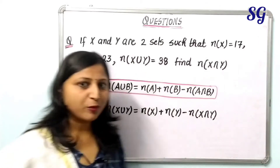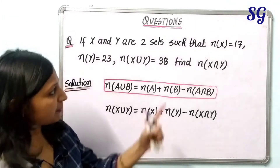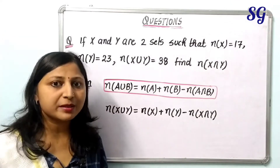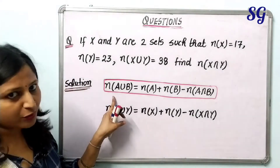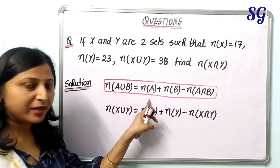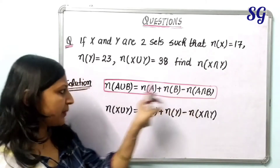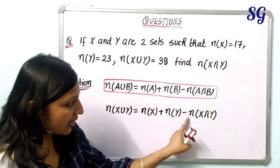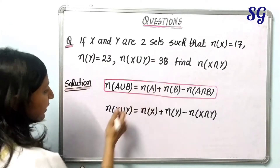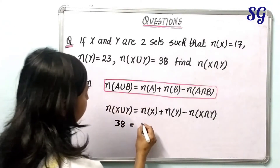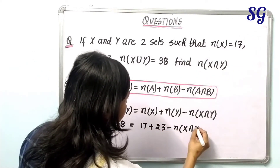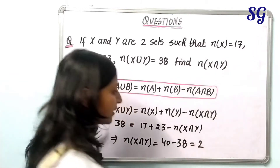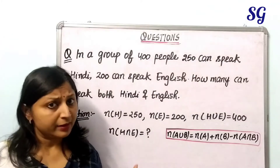Now let's move to questions. Question 1: If X and Y are two sets such that n(X) = 17, n(Y) = 23, and n(X∪Y) = 38, find n(X∩Y). We use the formula n(A∪B) = n(A) + n(B) - n(A∩B), replacing A and B with X and Y. Substituting: 38 = 17 + 23 - n(X∩Y), so n(X∩Y) = 40 - 38 = 2. A very direct question.